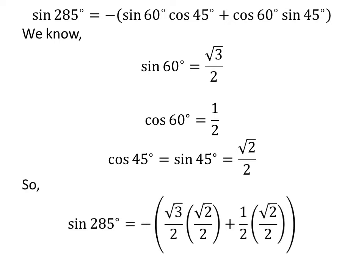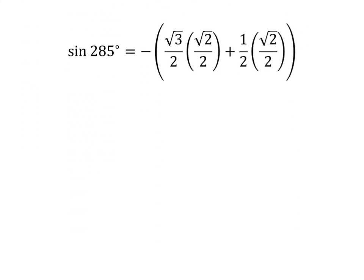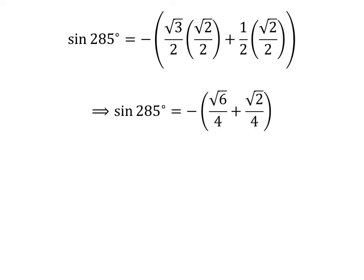We get sine of 285 degrees is equal to minus square root of 3 over 2 times square root of 2 over 2, plus 1/2 times square root of 2 over 2. Straight multiplication gives us sine of 285 degrees is equal to minus square root of 6 over 4 plus square root of 2 over 4.